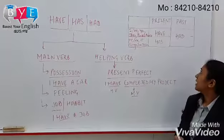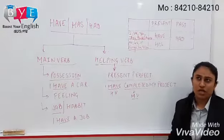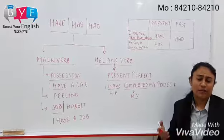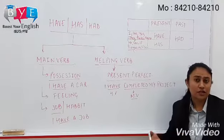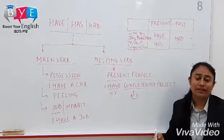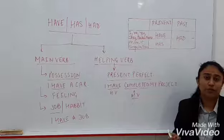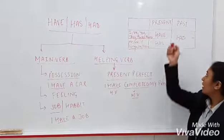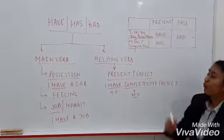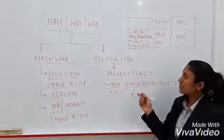Let's take another example: 'I had a pet dog when I was in Canada.' Here, I am talking about the past. So we have used verb 'had'. So this is all about today's lesson.